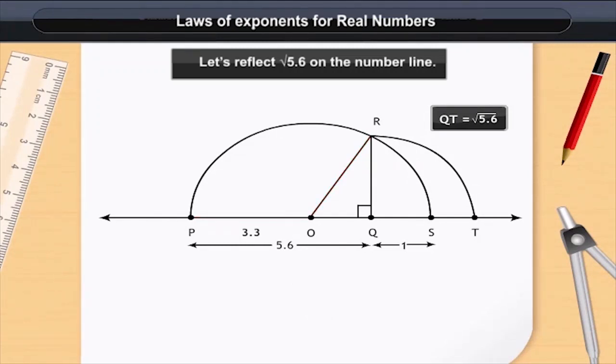What about OQ? OQ is equal to OS minus QS is equal to 3.3 minus 1 is equal to 2.3 units.